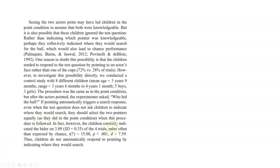But that's not what happened — the children correctly indicated the hider on 3.89 of four trials, more often than expected by chance. Thus, children do not automatically respond to pointing by indicating where they would search, so that possible alternative explanation is not true.